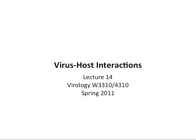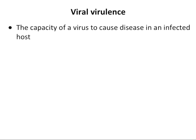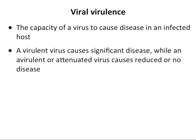Good afternoon. Today we're going to continue looking at the interaction of viruses with hosts, the different kinds of interactions that can occur. We're going to start talking about virulence — viral virulence. This means the capacity of a virus to cause disease in the infected host. A virulent virus causes significant disease, while one that is avirulent or attenuated causes reduced or no disease.